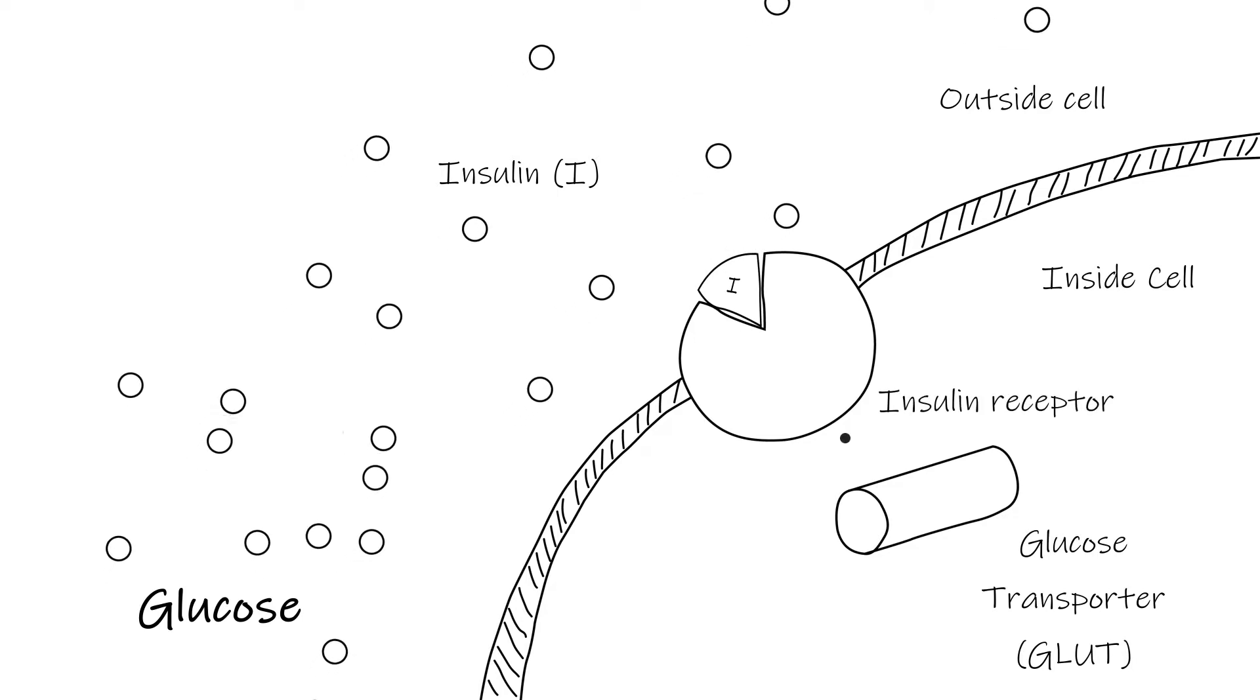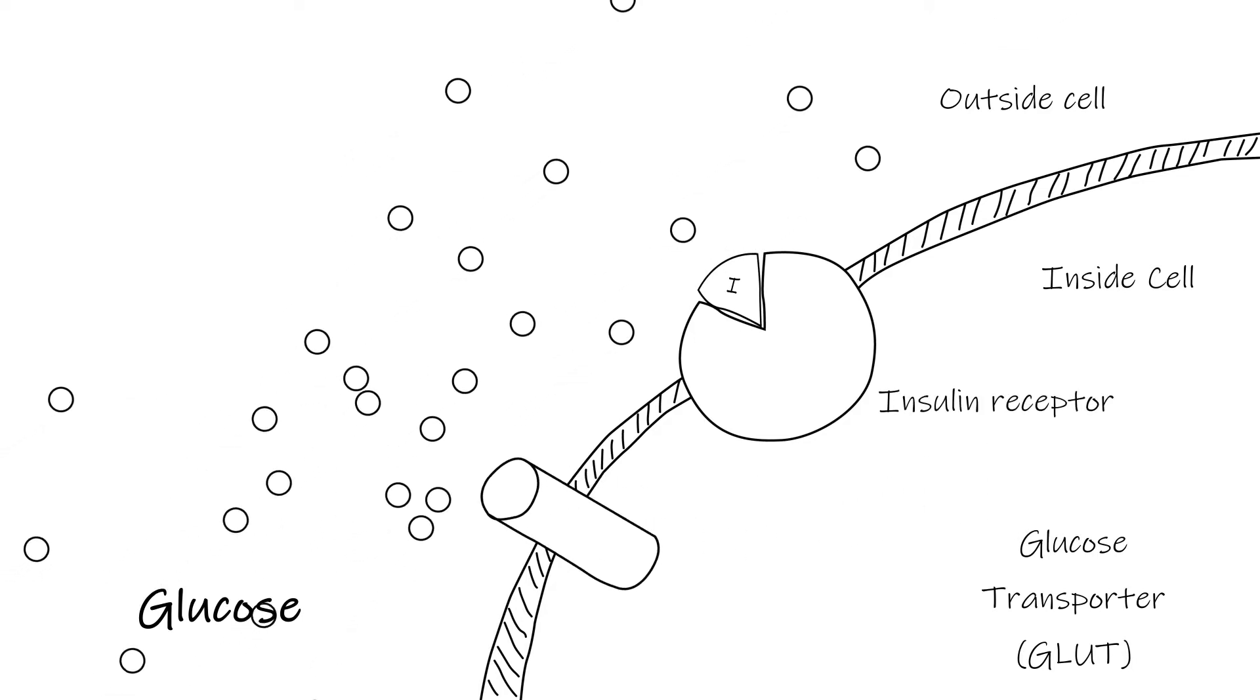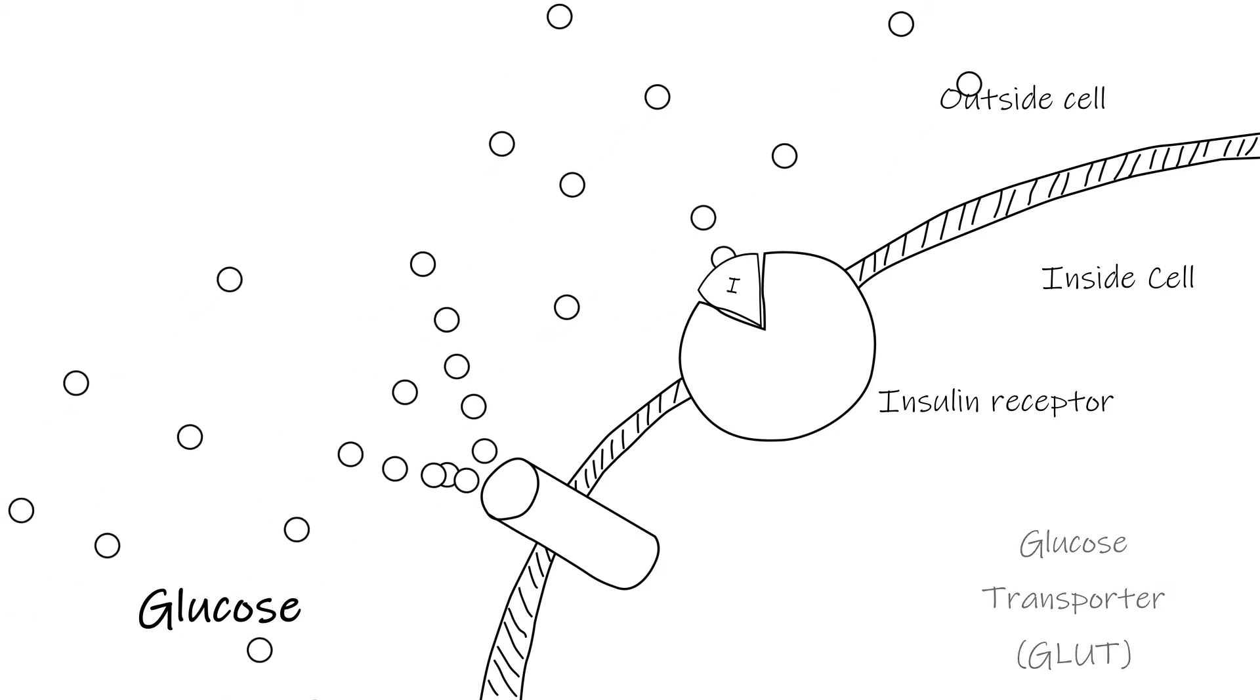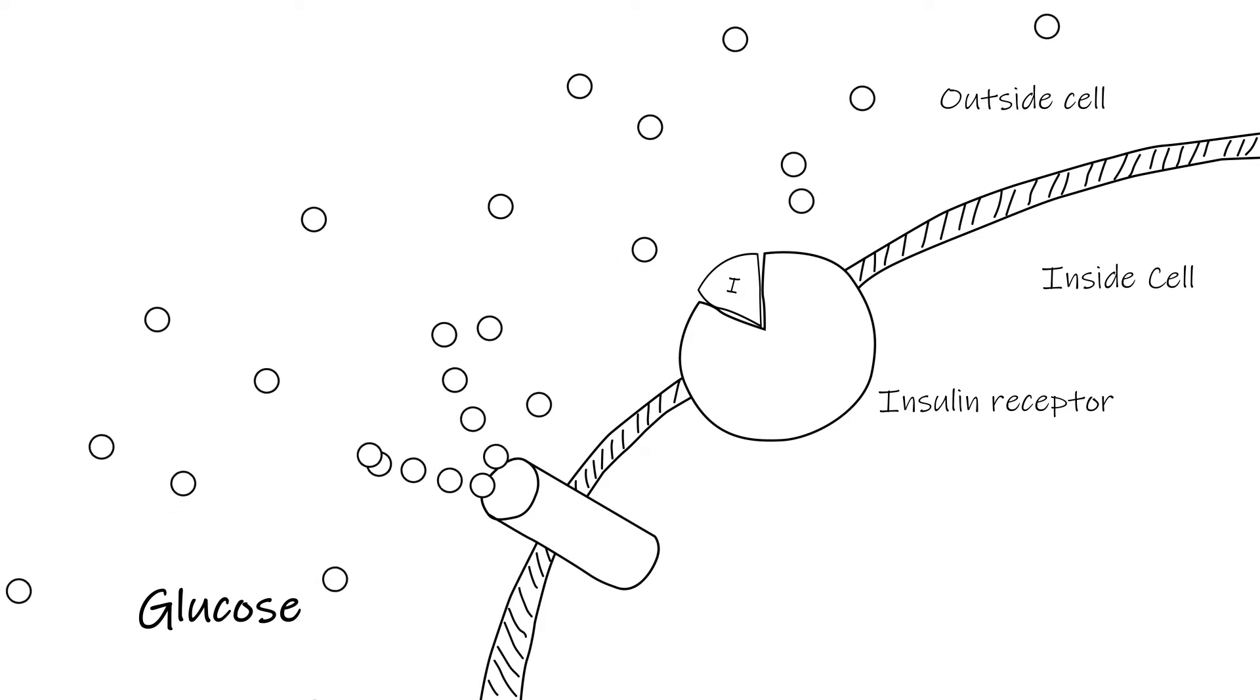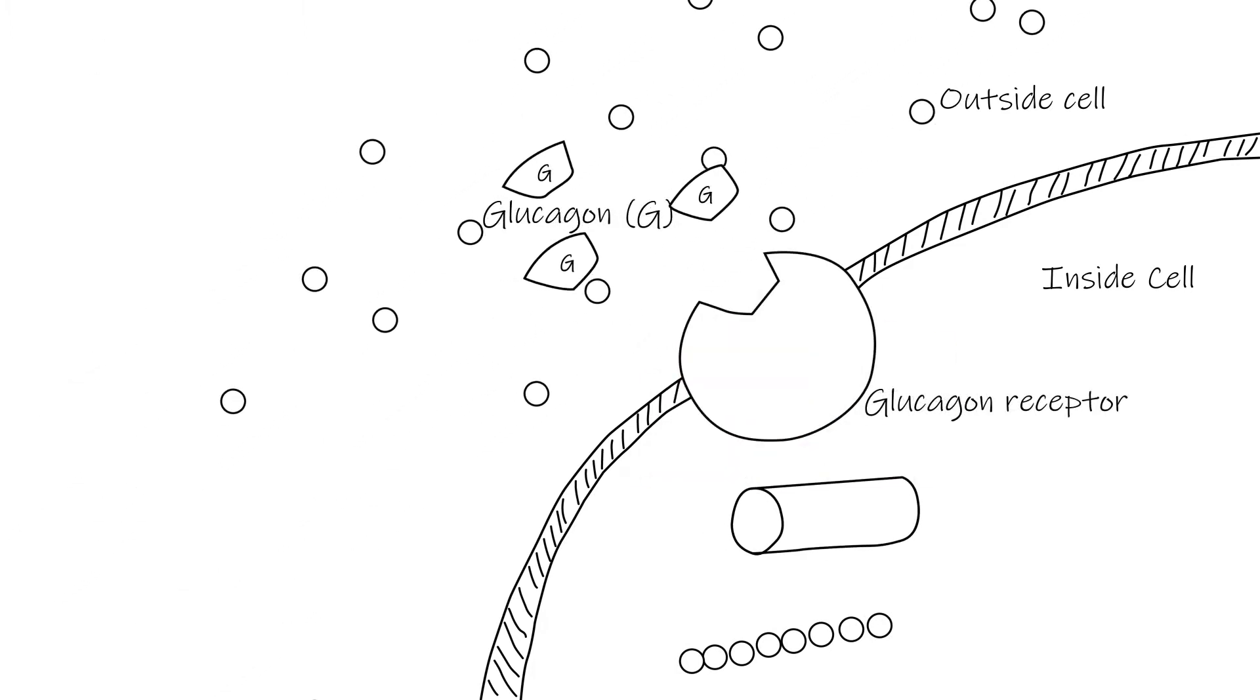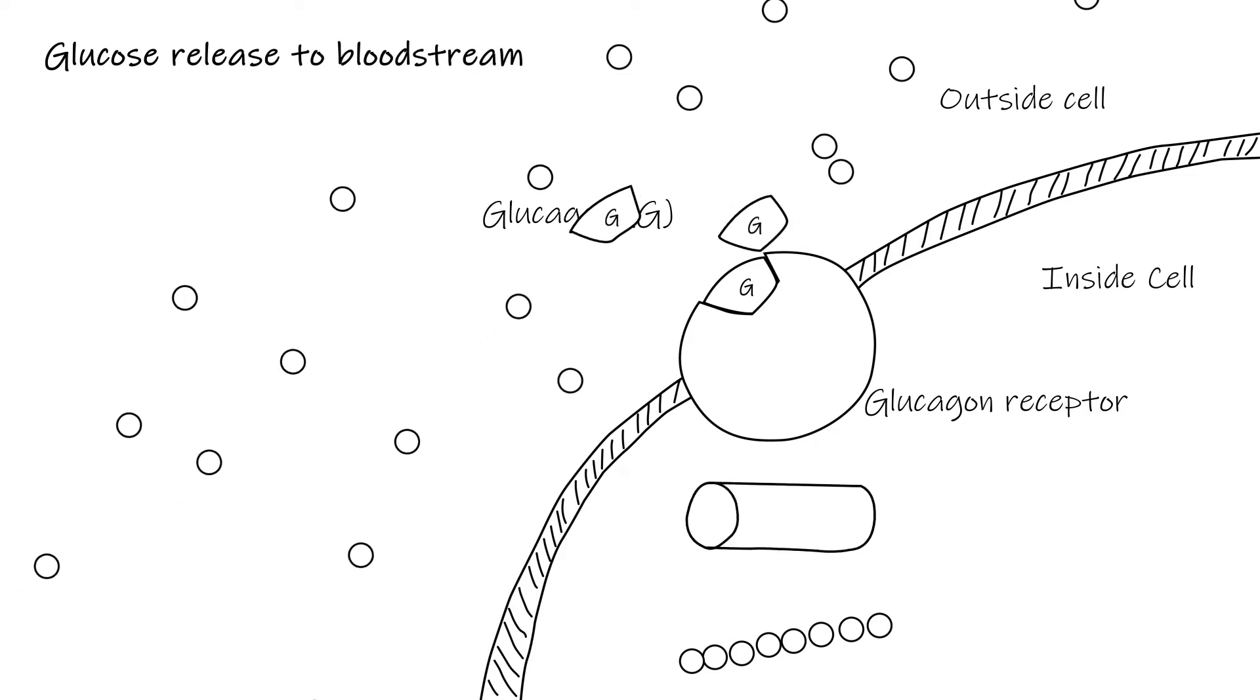In order for the muscle, liver and fat cells in the body to use glucose, two hormones, insulin and glucagon, are needed to store and release glucose. Insulin regulates the importation and storage of glucose, while glucagon regulates the release of glucose.